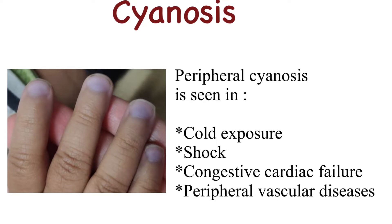Peripheral cyanosis can be seen in cold exposure, shock, congestive cardiac failure, and peripheral vascular diseases.